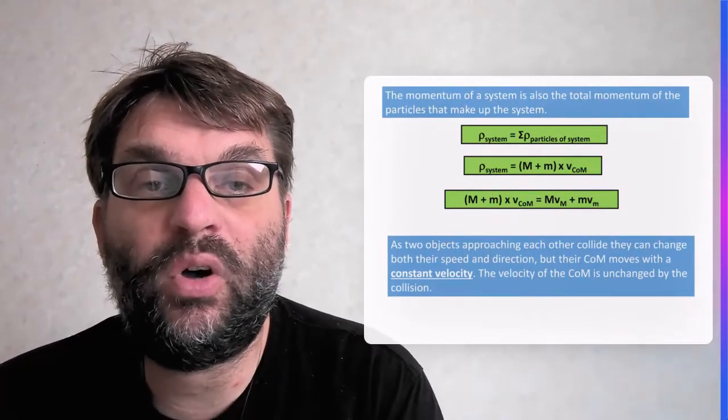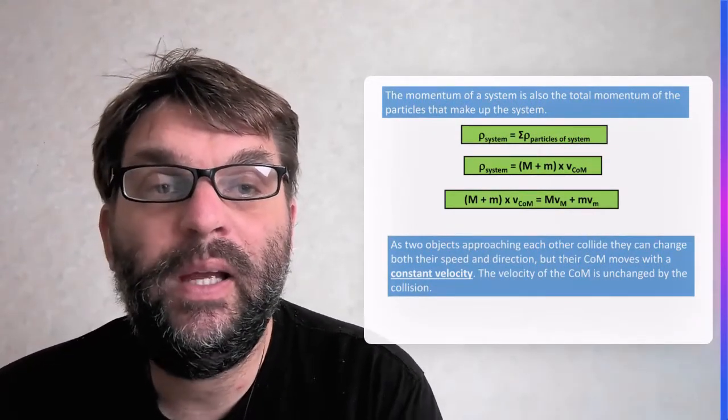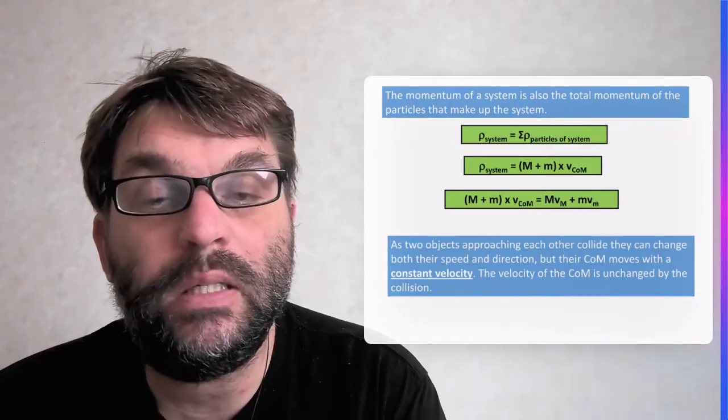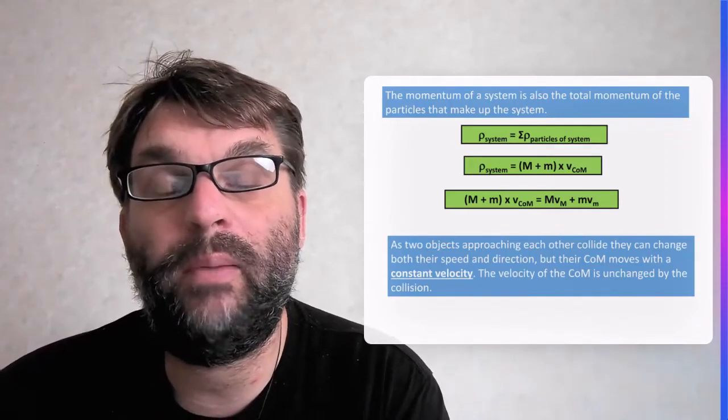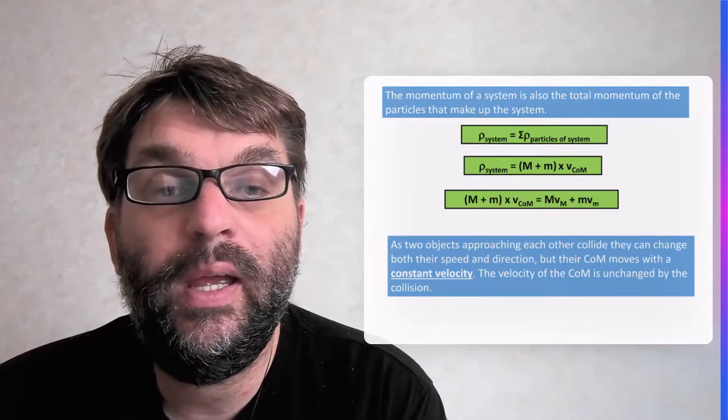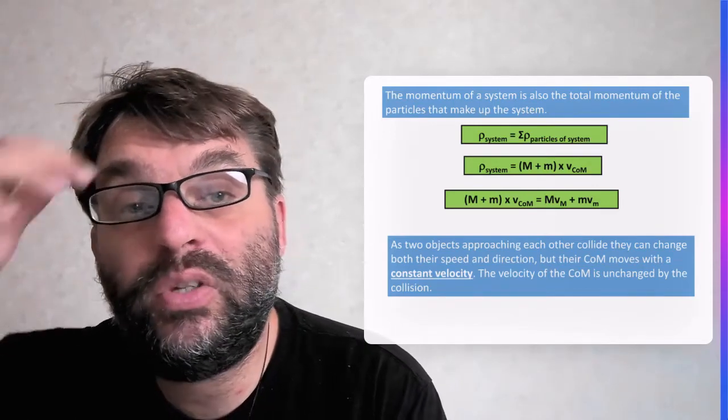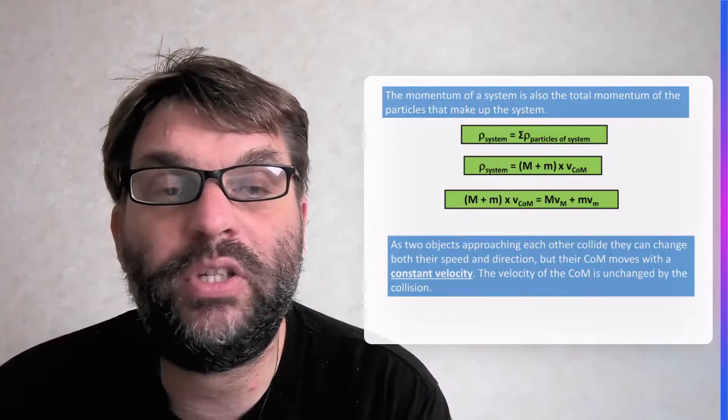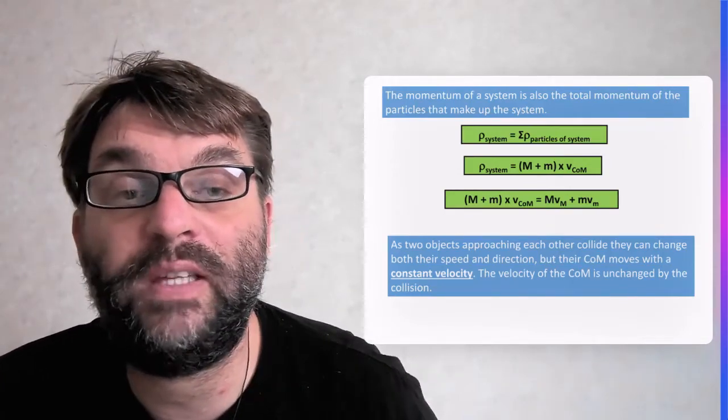In terms of the momentum of the system, it's going to be equal to the sum of all the particles in the system, which will become more important when we look at momentum in two dimensions. So in the particular case that we used, the momentum of the system will be the big mass plus the small mass times the velocity of that centre of mass.